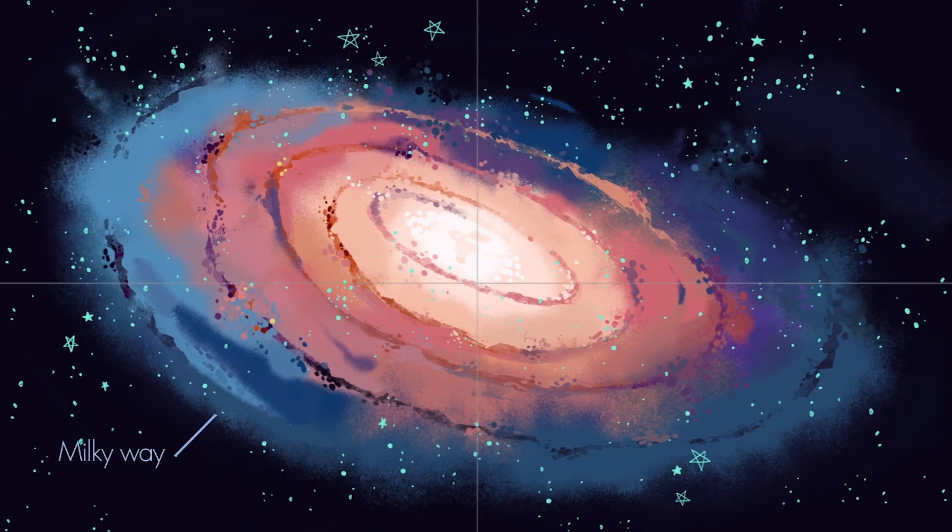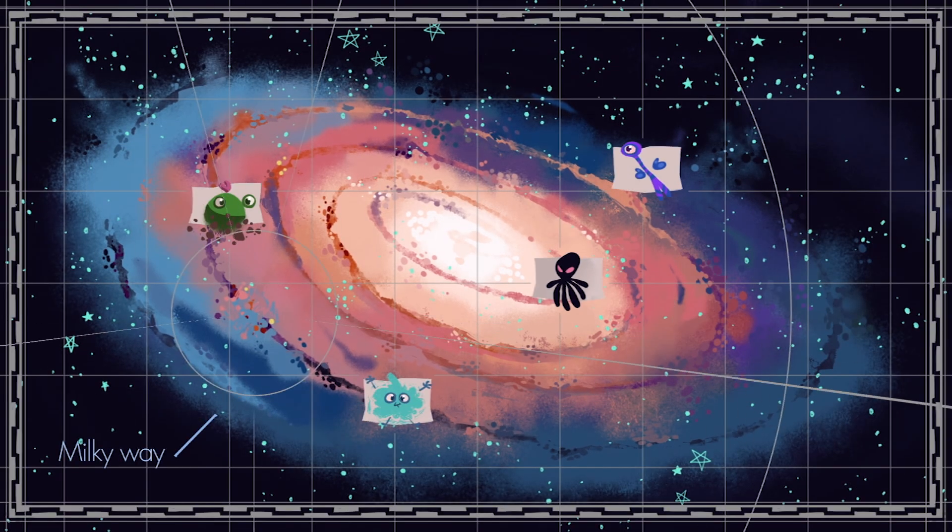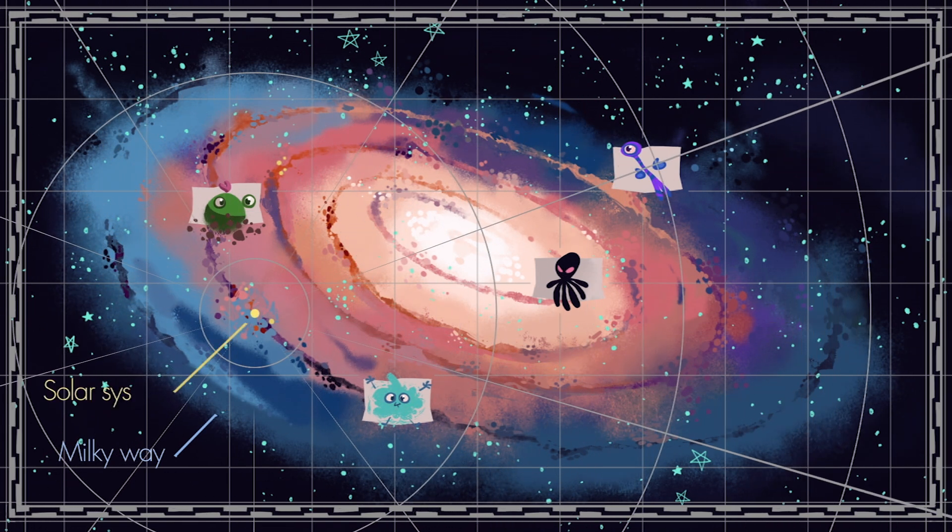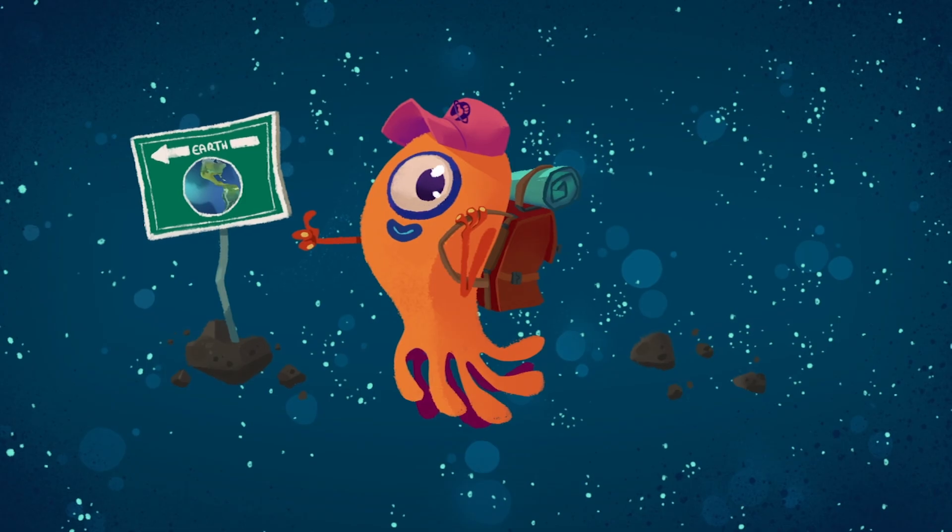They also included a map. Each golden record displays the location of our Solar System with respect to 14 pulsars. Their precise, unique frequencies were indicated, so that intelligent extraterrestrial life forms could use them to find the Earth.